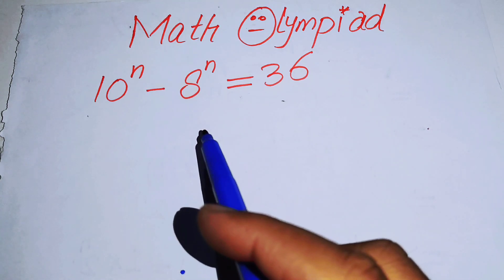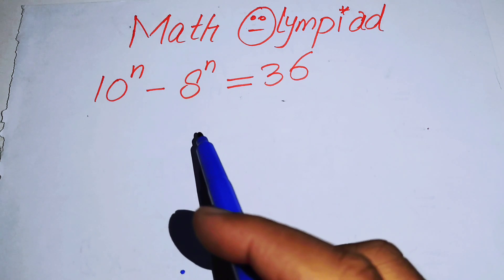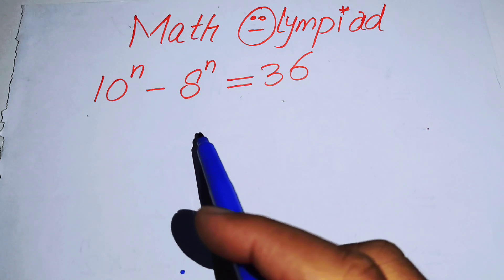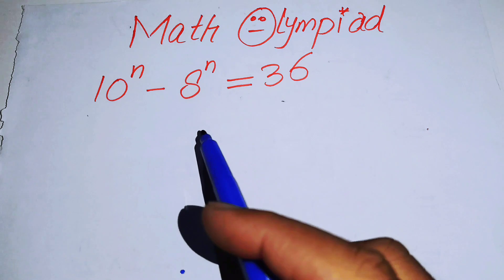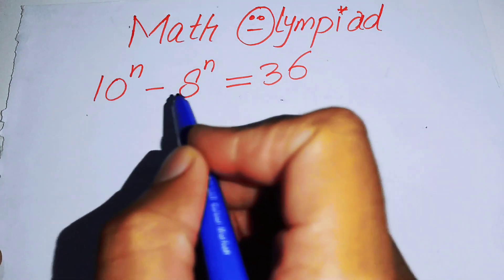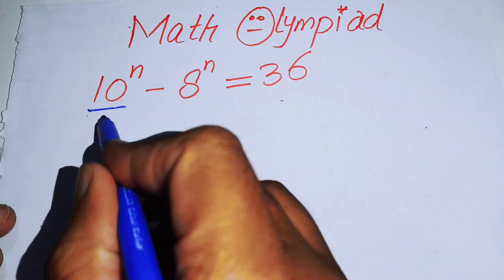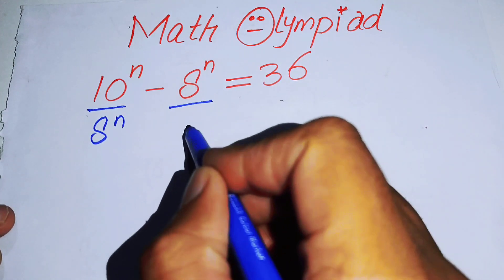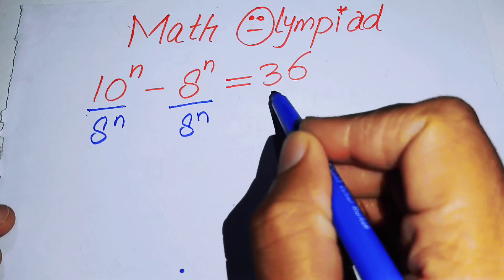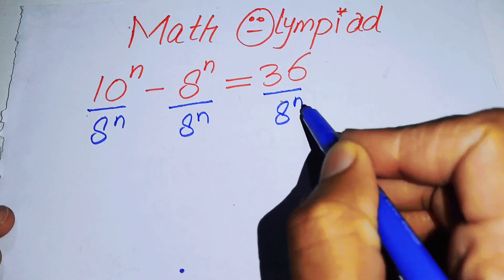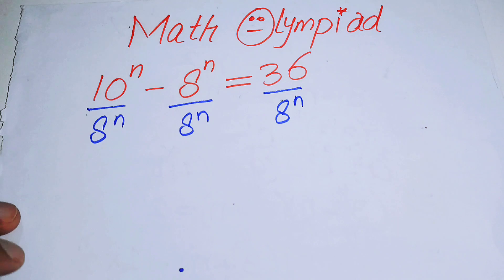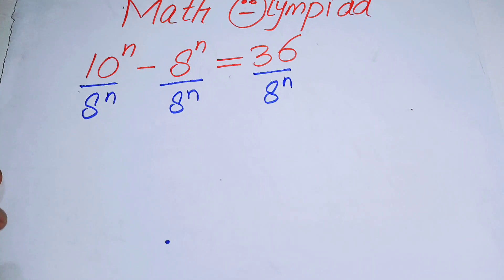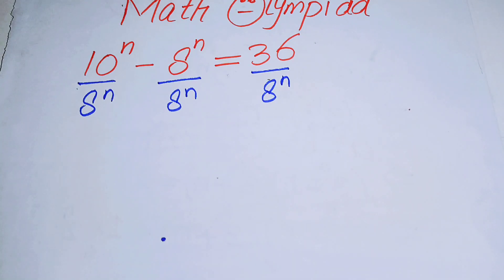The very first thing we are going to do is divide both sides by 8 to the power of n. So when we divide both sides by 8 to the power of n, the left side simplifies and the right side becomes 36 over 8 to the power of n.